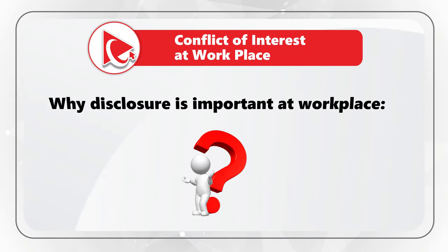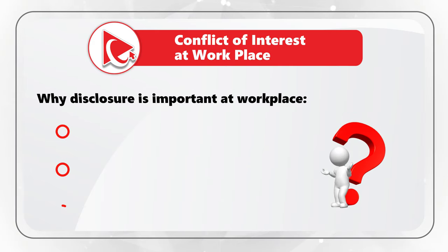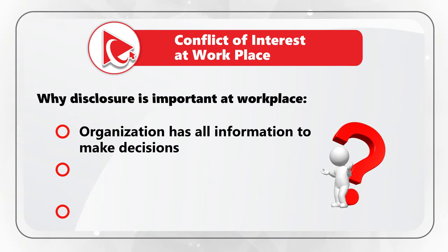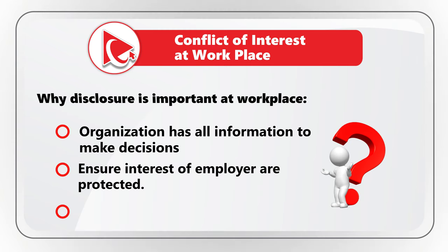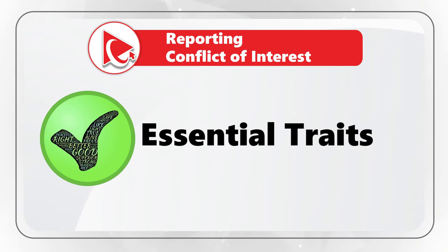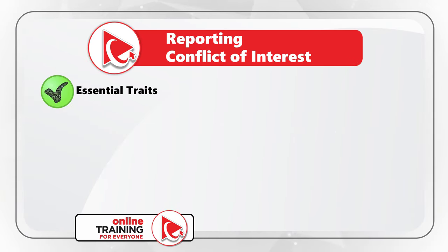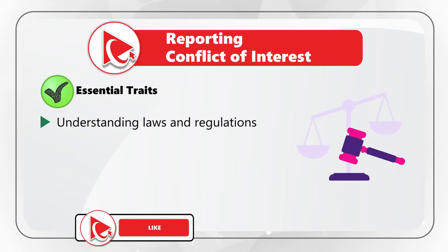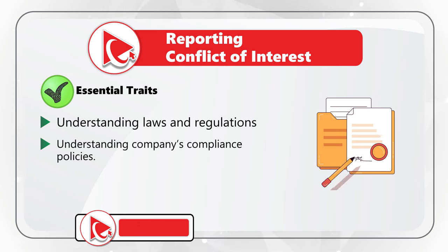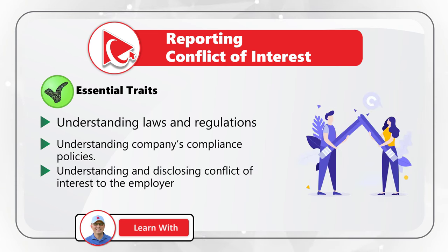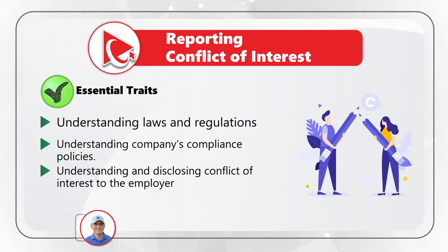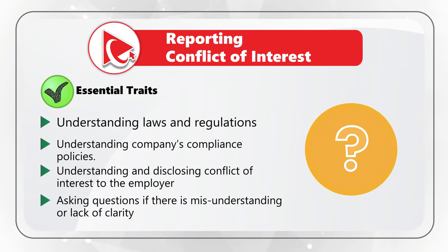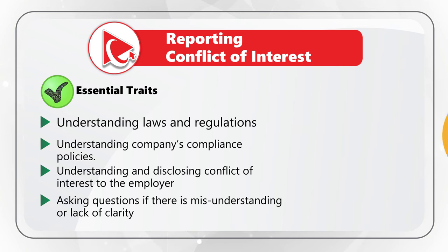Most organizations have policies in place to disclose conflicts of interest for employees and managers. There are three main reasons why disclosure is important: first, the organization needs all the information to make decisions; second, disclosing conflict of interest ensures the employer's interests are protected; third, it reduces legal problems. Four important traits are tested here: understanding laws and regulations, understanding compliance policies, understanding and disclosing conflict of interest, and asking questions when there is a lack of clarity.